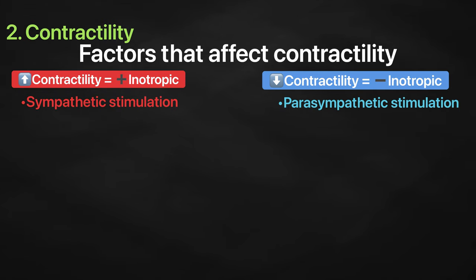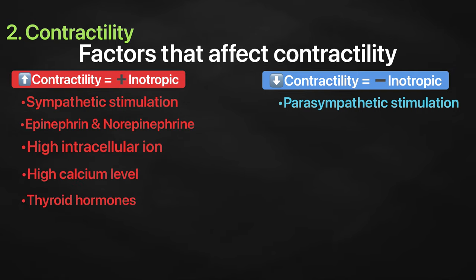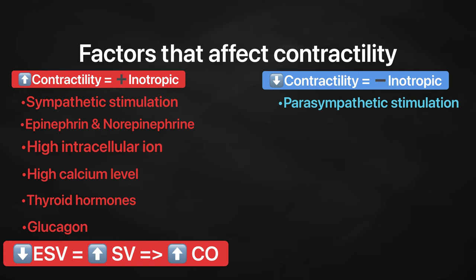Here are the factors that can affect changes in the force of contractility. A decrease in end-systolic volume may be caused by one of these factors or more: sympathetic stimulation, epinephrine and norepinephrine, high intracellular ions, high blood calcium level, thyroid hormones, and glucagon. So if there is a decrease in end-systolic volume, meaning the ventricle pumps out more blood and this will result in more stroke volume and consequently high cardiac output.